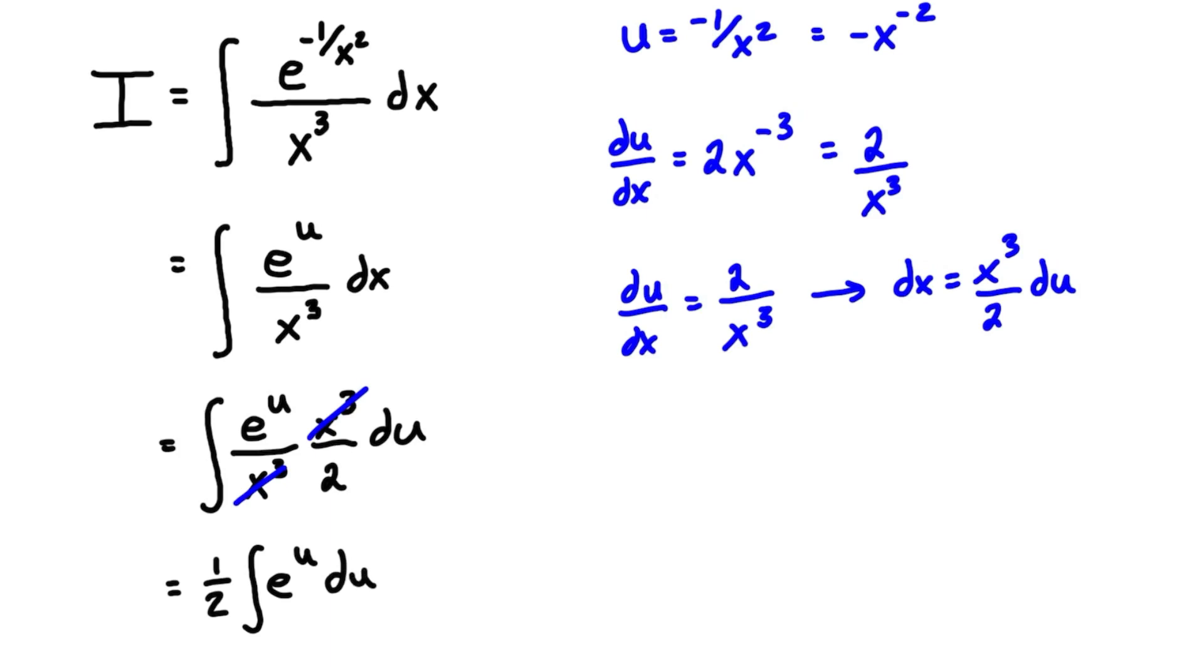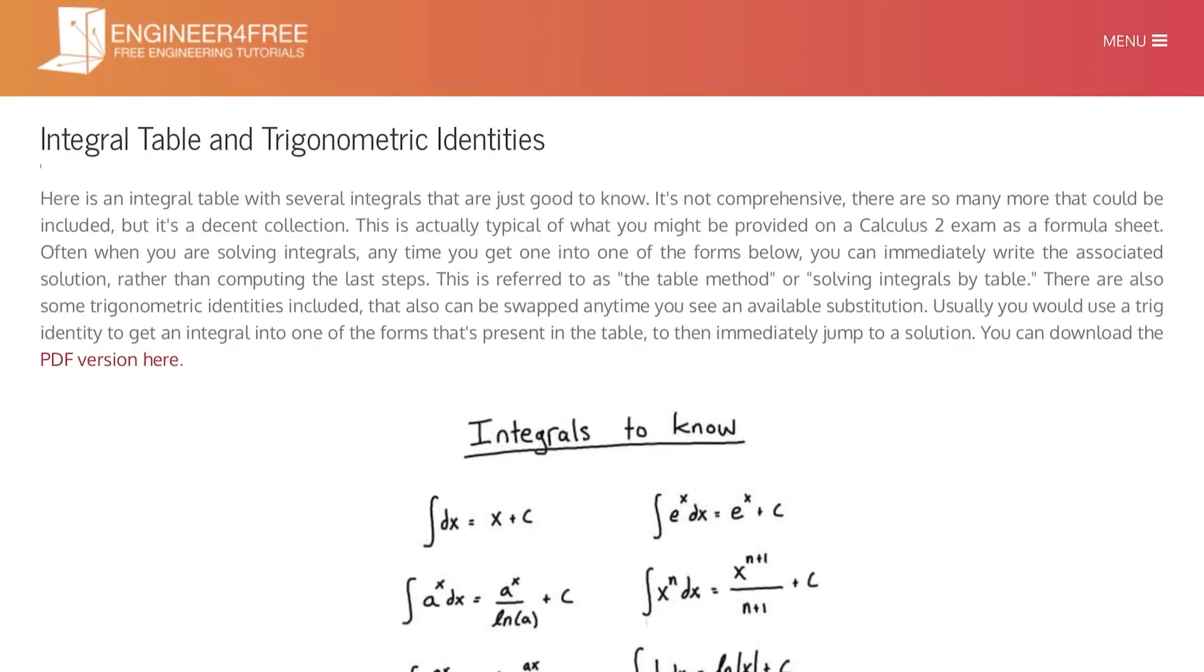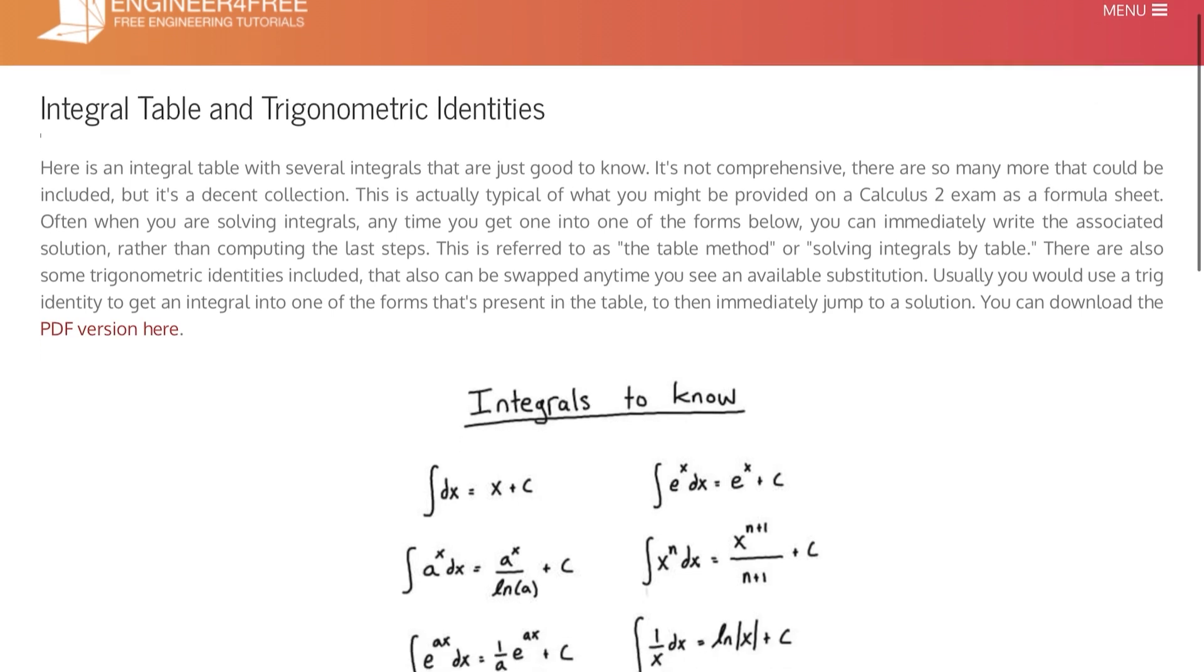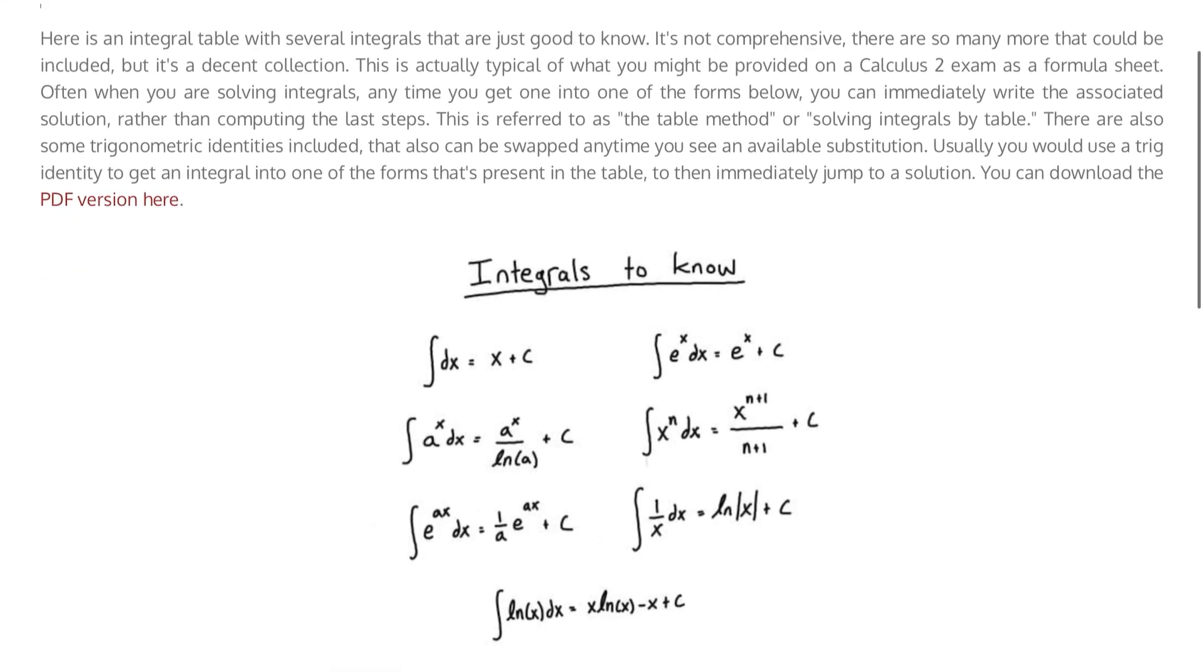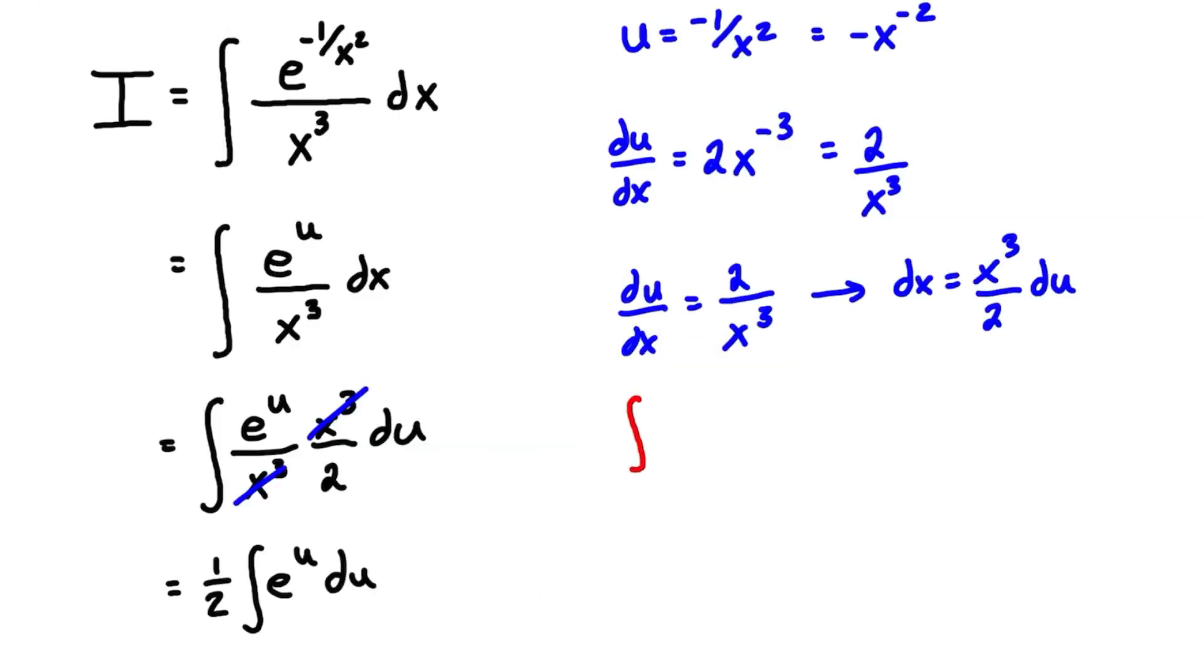And now we have this in a pretty simple form, so if you have this memorized, the integral of e to the u du or e to the x dx, then you can just go ahead and write the solution. But if you don't remember what it is, you can look at the table, and I have one here, there's a link in the description below where you can get this table, it's like a permanent link on the engineer for free website. We want to scan through here until we see the integral that we're looking for, and it's right near the top actually. The integral of e to the x dx is just equal to e to the x plus c. Now this works if you substitute e to the u du, this would just be e to the u. So let's just write it down here in red, this is our table value, so we have the integral of e to the u du is just equal to e to the u plus c.